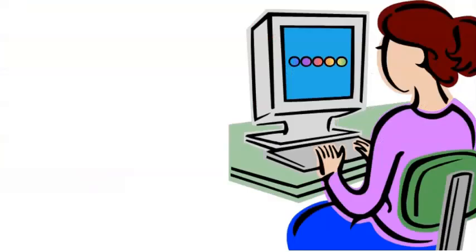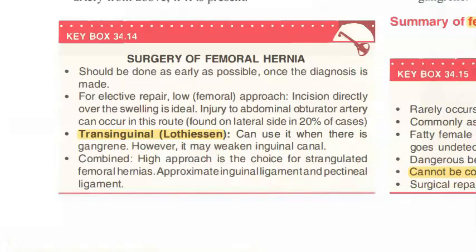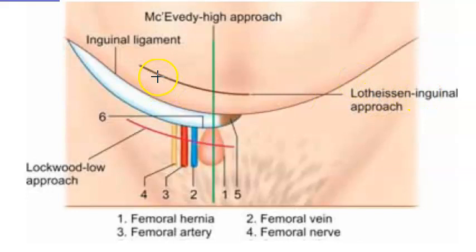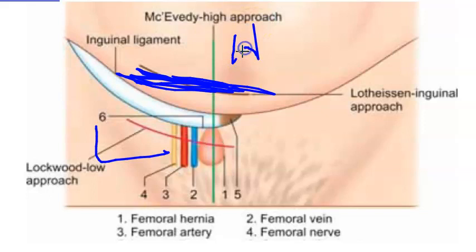Surgery for femoral hernia should be done as early as possible because of the risk of strangulation. For elective repair, the low femoral approach or the Lothissen trans-inguinal approach is used. The Lothissen inguinal approach is at an intermediate level — below it is Lockwood's low approach, and above it is McEvedy's high approach.